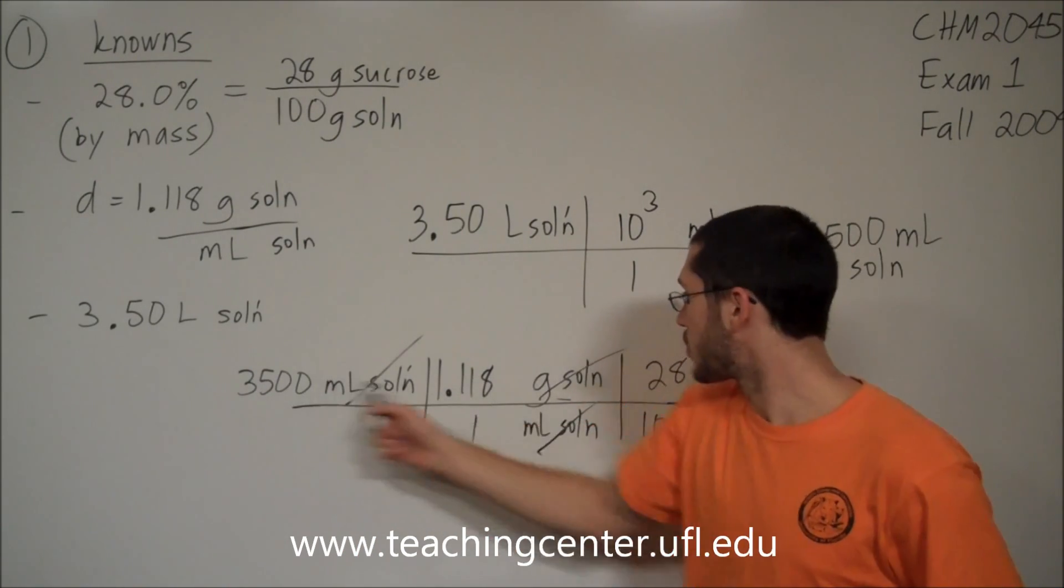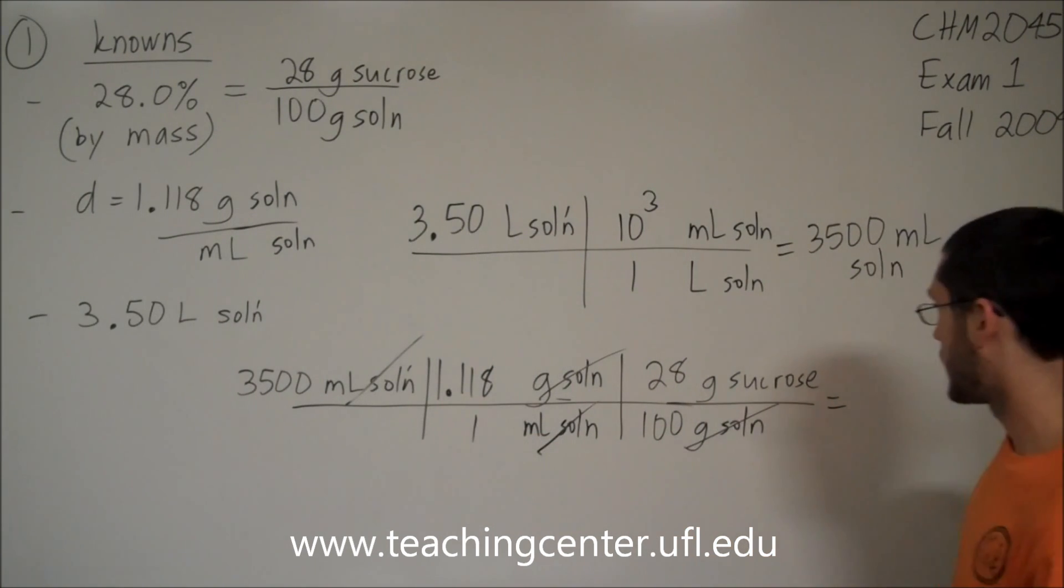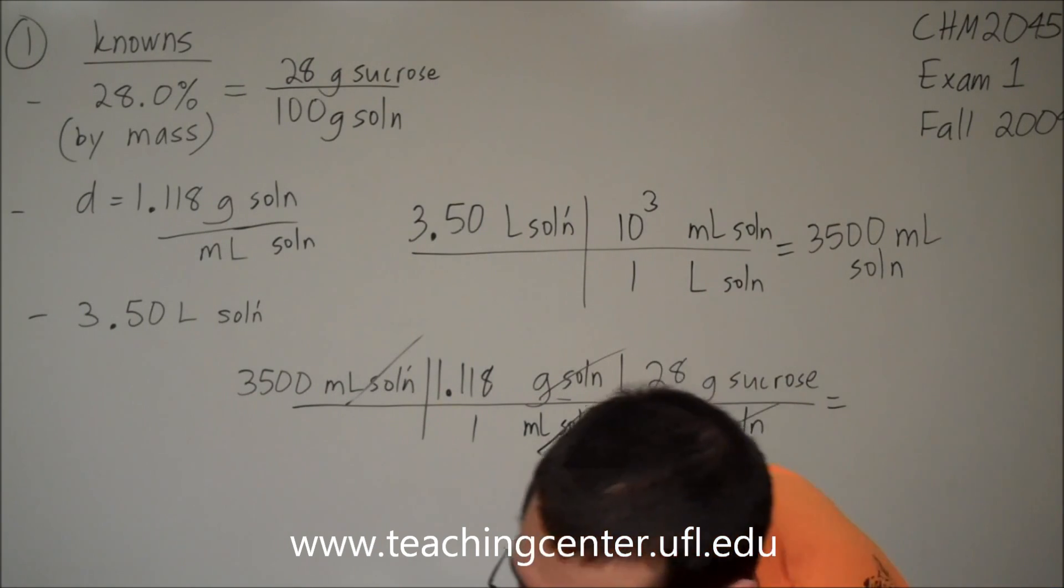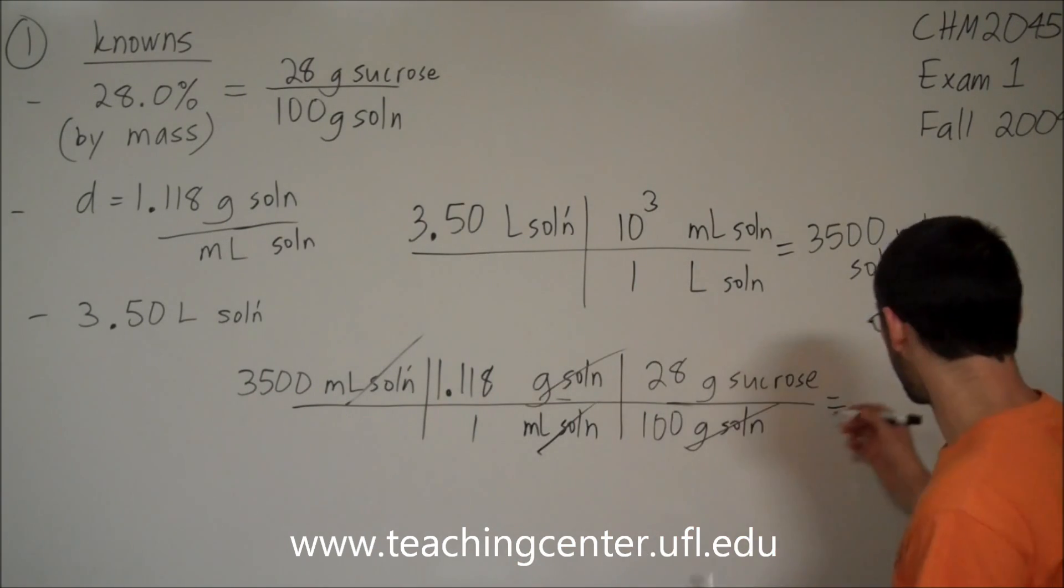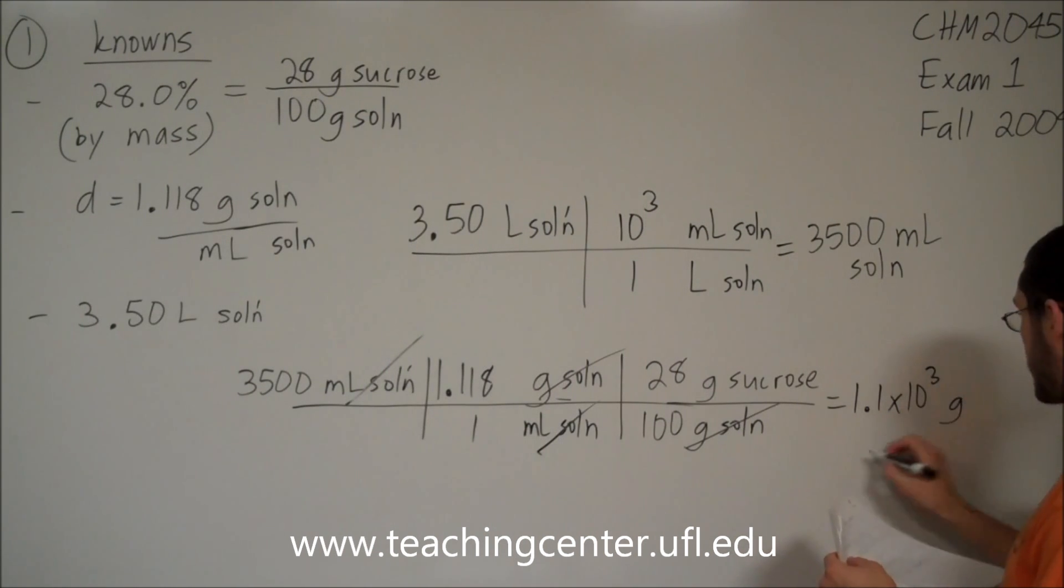And then you're going to punch in those numbers. Multiply this number with this number with this number. And then divide by every number on the bottom. Once you do that, the correct answer is 1.1 times 10 to the third grams of sucrose.